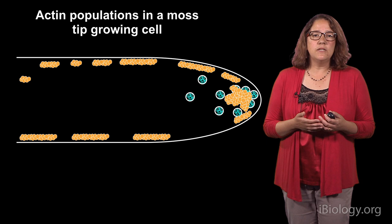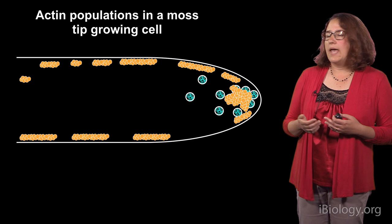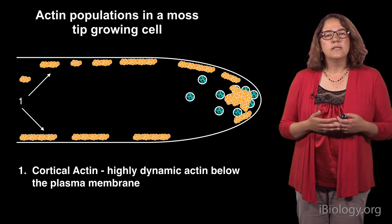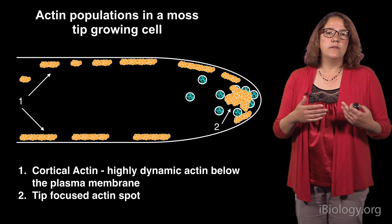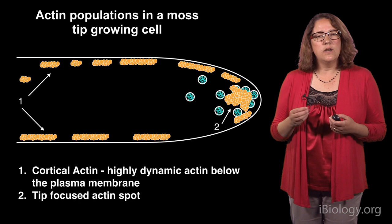First let me just back up a little bit and tell you that this kind of growth is dependent on the actin cytoskeleton. Actin is a protein that goes from a monomer to a filament, and there are two major populations in these cells. One is a very dynamic array of actin filaments that are rapidly remodeling underneath the plasma membrane — this is the cortical actin array — and then there's also a tip-focused actin spot. We want to understand how these arrays are established. In part one, I told you that depolymerizers were very, very important for this array and for growth.